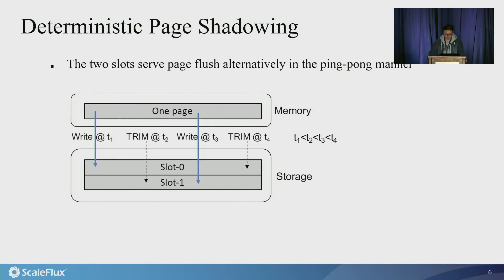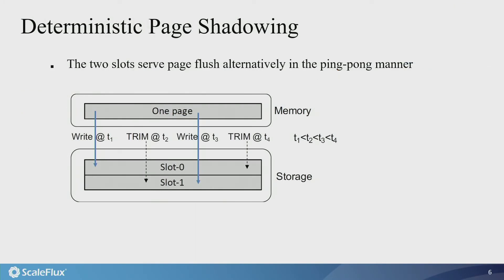So first, to eliminate the extra write overhead and meanwhile simplify the storage management, we proposed deterministic page shadowing. For each page, B+ tree allocates double B+ tree page size amount of logical storage area on the LBA space and partitions it into two slots.